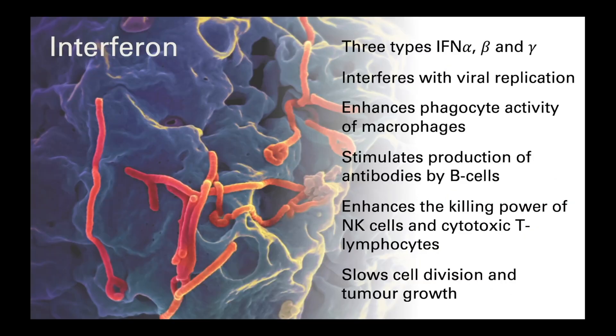It's also worth discussing interferons at this point, especially as they are highly active against viral infections — and at the time of making this video, this is a very topical subject due to COVID-19. Interferons are another subset of cytokines; there are only three of these, and they act to interfere with viral replication, hence their name. Beyond directly inhibiting viral replication, they also enhance the phagocytic activity of macrophages, help stimulate the production of antibodies by B lymphocytes, increase the cytotoxicity of natural killer cells and T lymphocytes, and slow cell division, which is an effective means of slowing tumour growth.